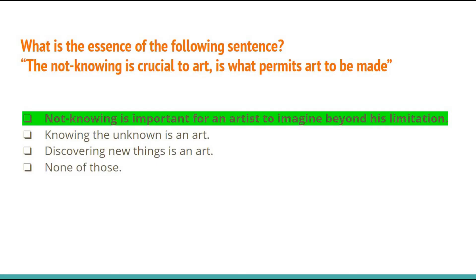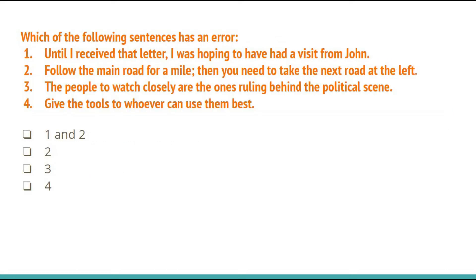What is the essence of 'The not knowing is crucial to art — is what permits art to be made'? The answer is option A: 'Not knowing is important for an artist to imagine beyond his limitation.' Next, which of the following sentences has an error? The four sentences include: 'Until I received that letter, I was hoping to have had a visit from John'; 'Follow the main road for a mile, then take the next road at the left'; 'The people to watch closely are the ones ruling behind the political scene'; 'Give the tools to whoever can use them best.'